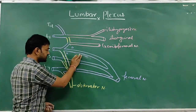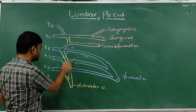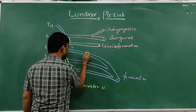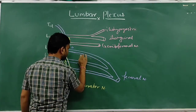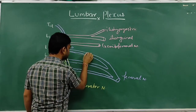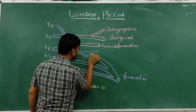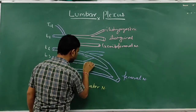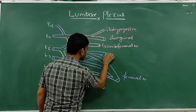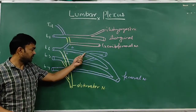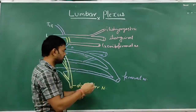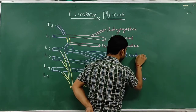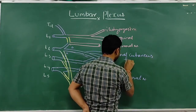The dorsal divisions from L2 and L3 join to form the lateral cutaneous nerve of the thigh.